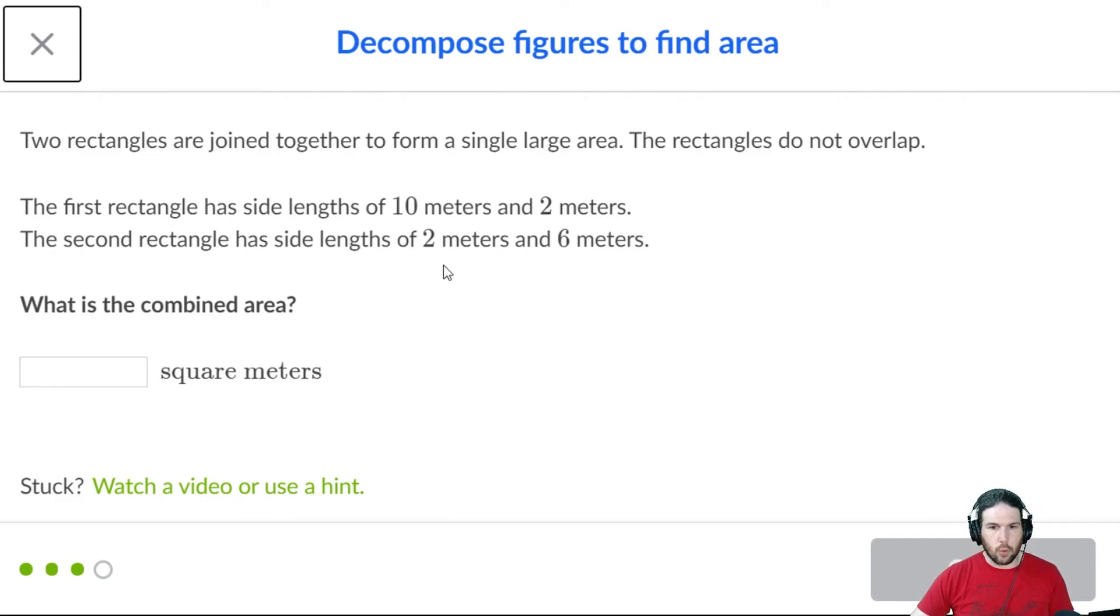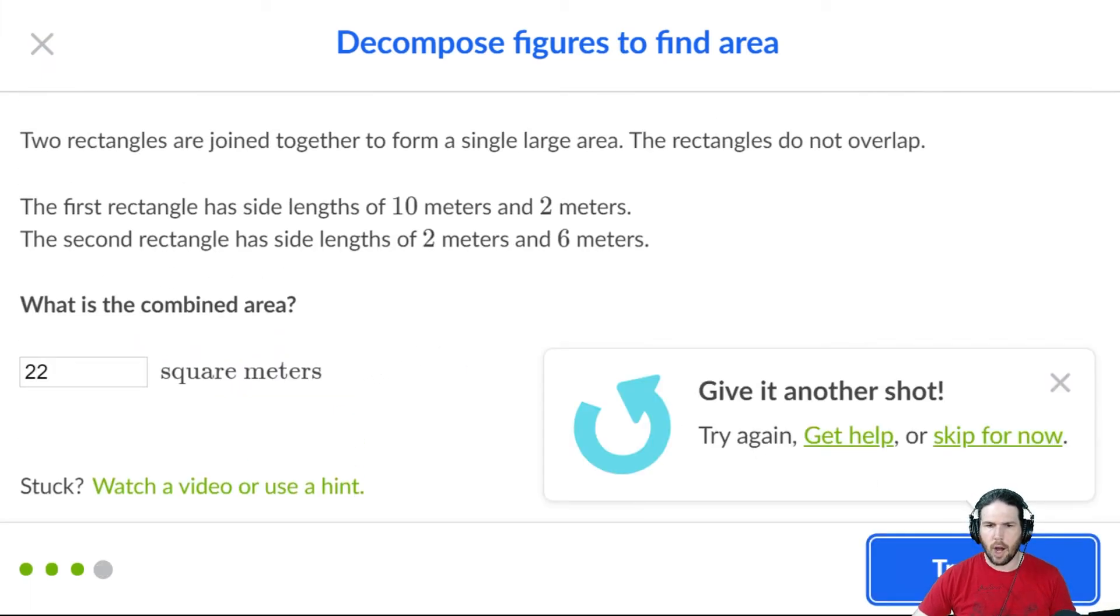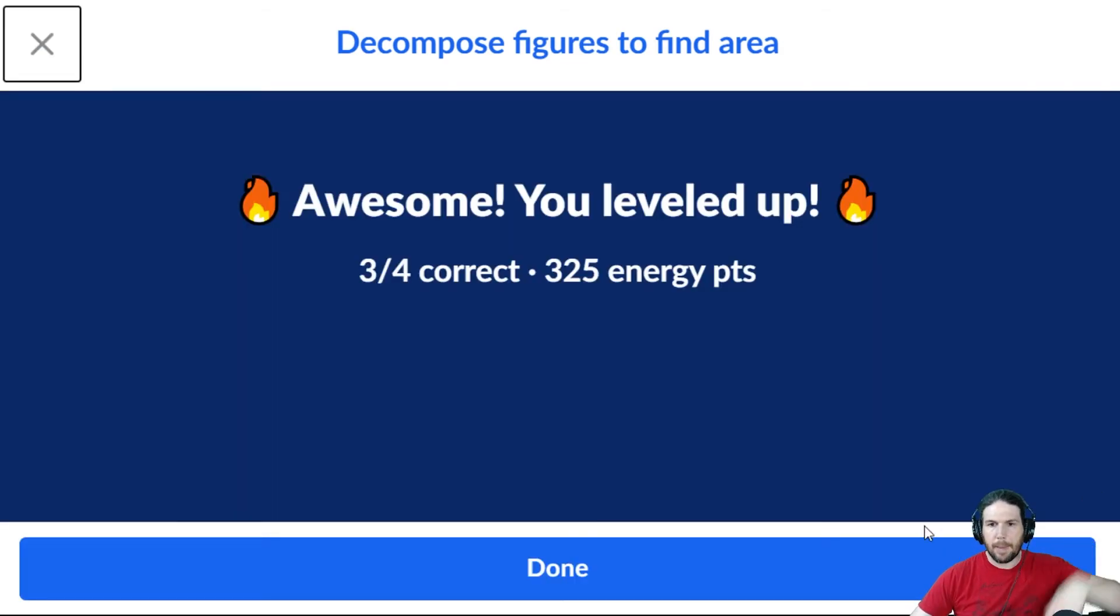10 by 2 is 20. 2 by 6 is 12. So the total combined area is 22 square meters. Oh, what did I do wrong? Oh, no. 32. Ha ha ha. Going too fast. That's okay. I'll get it back in the quiz.